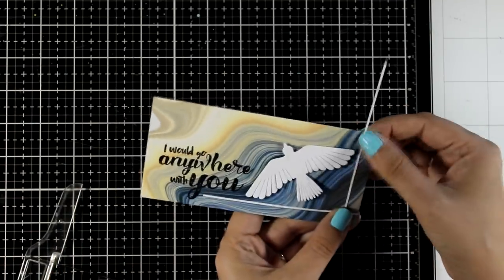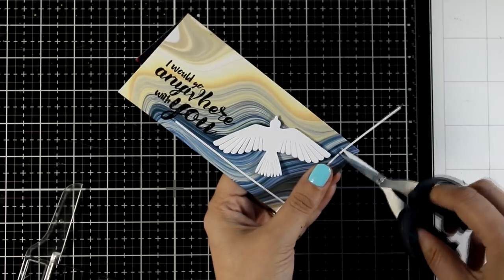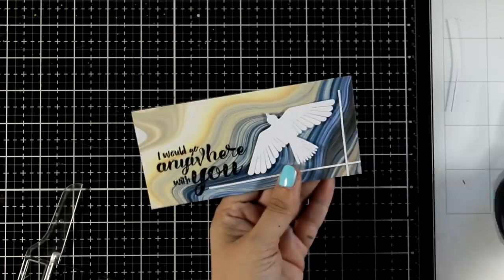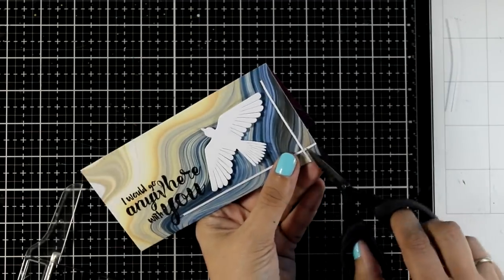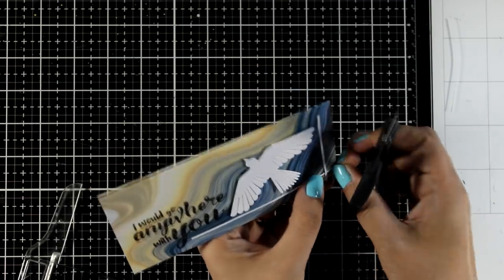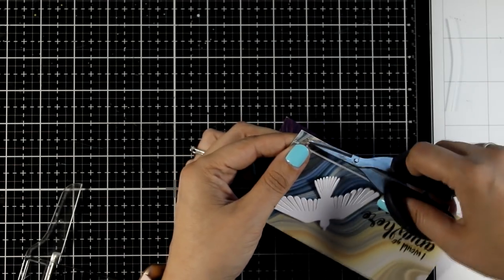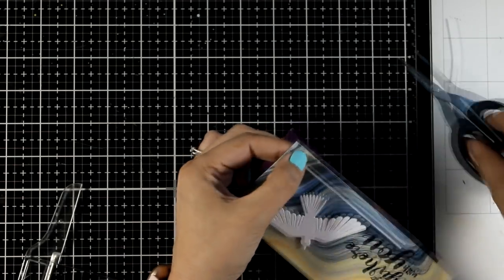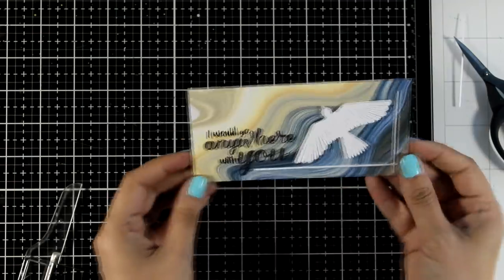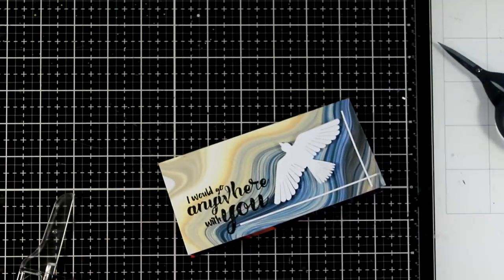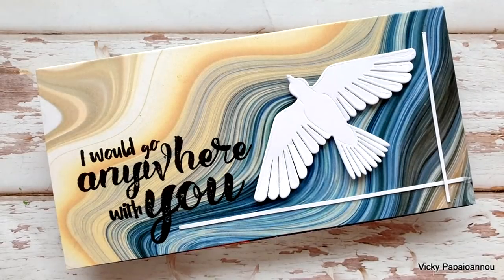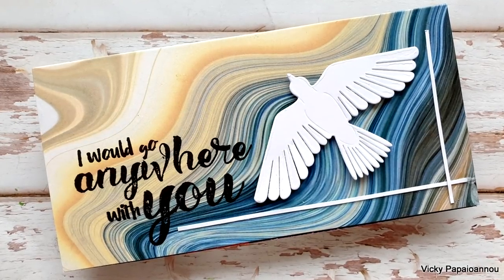By the way this bird comes from a previous release by Altenew. I believe it is from the previous month which is a set that has this bird in three different sizes. I did use it in another card as well. I find it really unique and I want to use it in one of my art journals actually. The set is called Feathered Friends Die Set but just like always you will find links to everything I use down below in the description area.